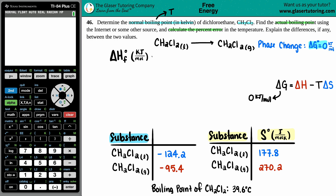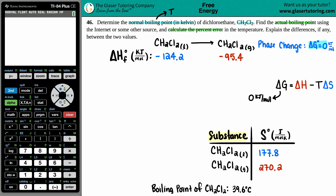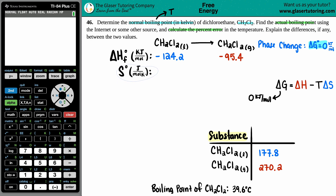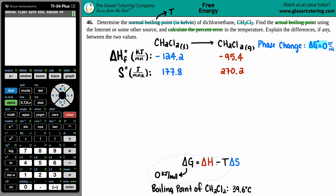From the textbook, the ΔH values for CH₂Cl₂ are: liquid = −124.2 kJ/mol, gas = −95.4 kJ/mol. The ΔS values are: liquid = 177.8 J/K, gas = 270.2 J/K.